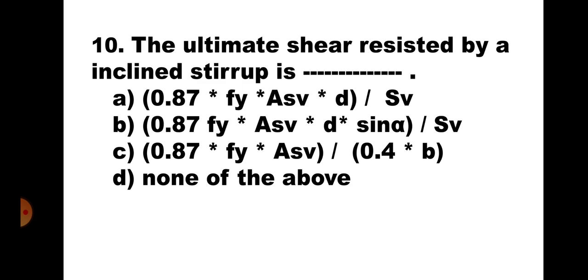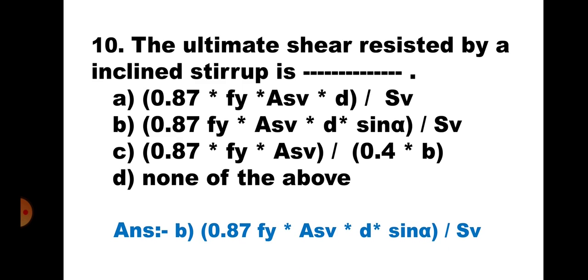Question 10. The ultimate shear resisted by an inclined stirrup is: A. 0.87Fy×ASV×D / SV, B. 0.87Fy×ASV×D×Sine Alpha / SV, C. 0.87Fy×ASV / 0.4B, and D. None of the above. For inclined stirrups, the inclination angle Alpha is involved, so only option B contains Sine Alpha. Hence, the correct answer is B. 0.87Fy×ASV×D×Sine Alpha / SV.